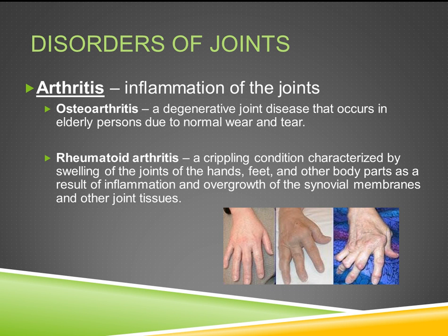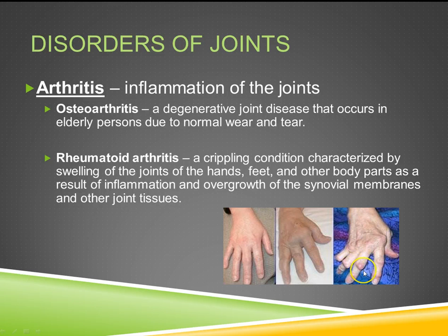Next is rheumatoid arthritis, or RA, a crippling condition characterized by swelling of the joints of the hands, feet, and other body parts as a result of inflammation and overgrowth of the synovial membrane and other joint tissue. It often affects the finger joints between the knuckles, causing them to swell and deform — very crippling and very painful.